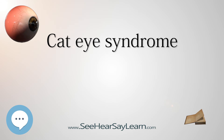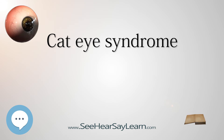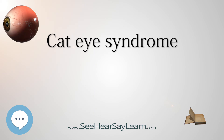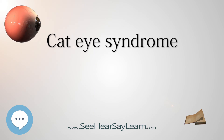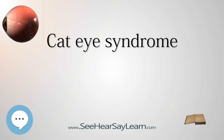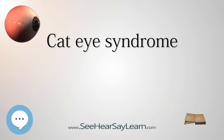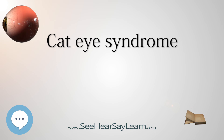History: The abnormalities common to cat-eye syndrome were first catalogued in 1899. It was described in association with a small marker chromosome in 1965. Early reports discussed the possibility of chromosome 13 involvement. Now, CES is considered to be present with the chromosome 22 trisomy findings.